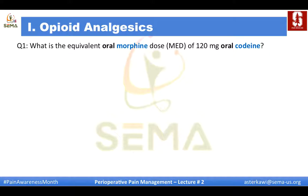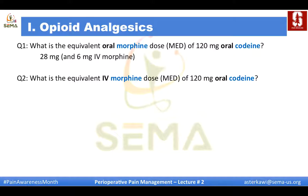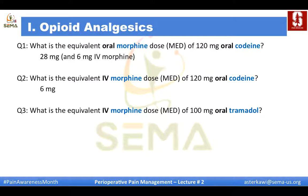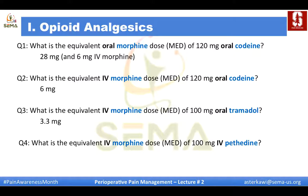When we deal with opioids and especially when we give multiple types of oral opioids, it's important to understand the potency compared to the gold standard, morphine. For example, what is the equivalent oral morphine dose of 120 mg oral codeine? That's 28 mg. Compared to IV morphine, that's 6 mg. What's the equivalent IV morphine dose of 100 mg oral tramadol? 3.3 mg. What's the equivalent IV morphine dose of 100 mg IV meperidine or pethidine? 10 mg.